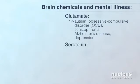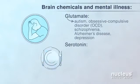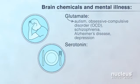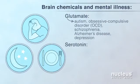Serotonin, another chemical messenger, helps control mood, hunger, and sleep. For example, people with depression often don't have enough serotonin.